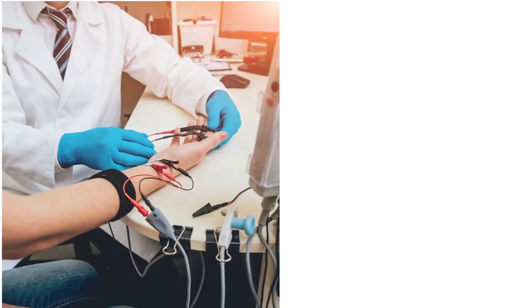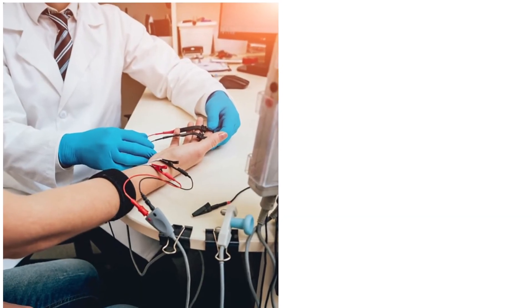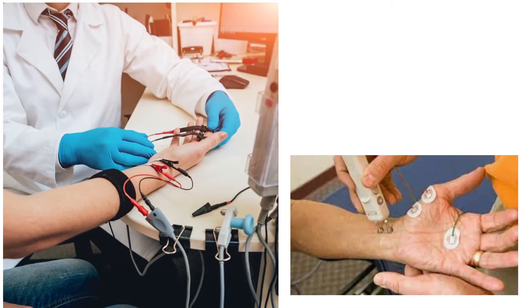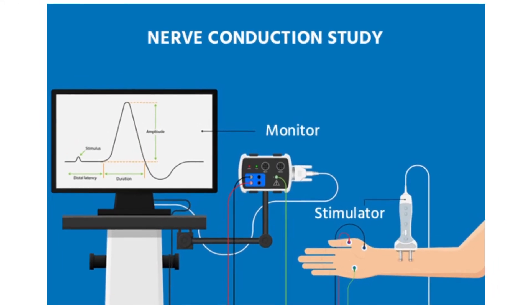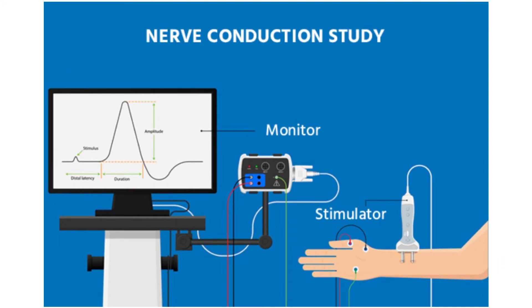In the NCS test, electrodes are placed on the skin where the area is to be assessed, and a mild shock is given. This stimulus or response is recorded and plotted on a graph. No preparation is required for the NCS test.